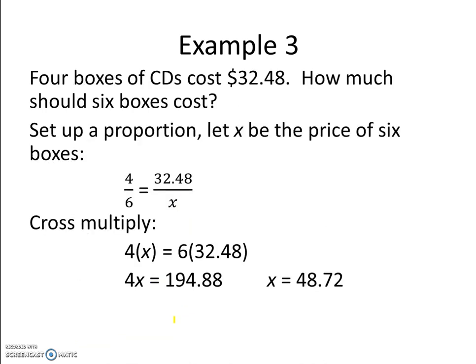In example 3, we have a nice word problem. 4 boxes of CDs cost $32.48. How much should 6 boxes cost? We set up a proportion, letting x be the price of 6 boxes, and we have 4 divided by 6 equals 32.48 divided by x.